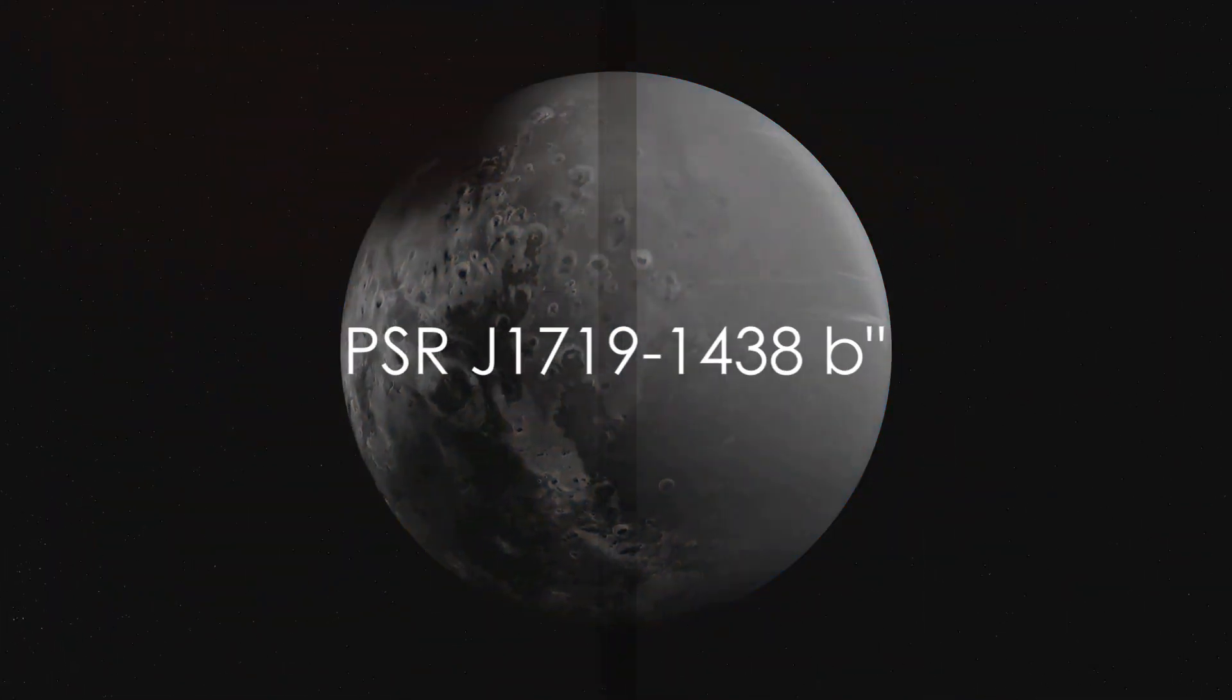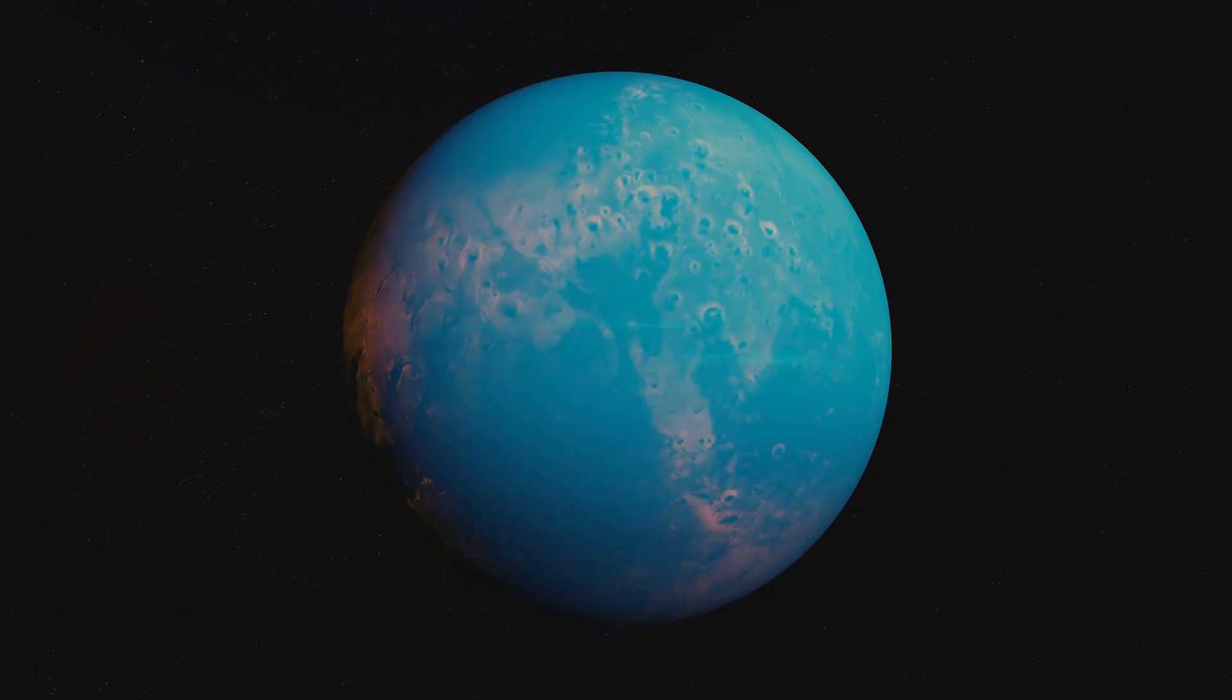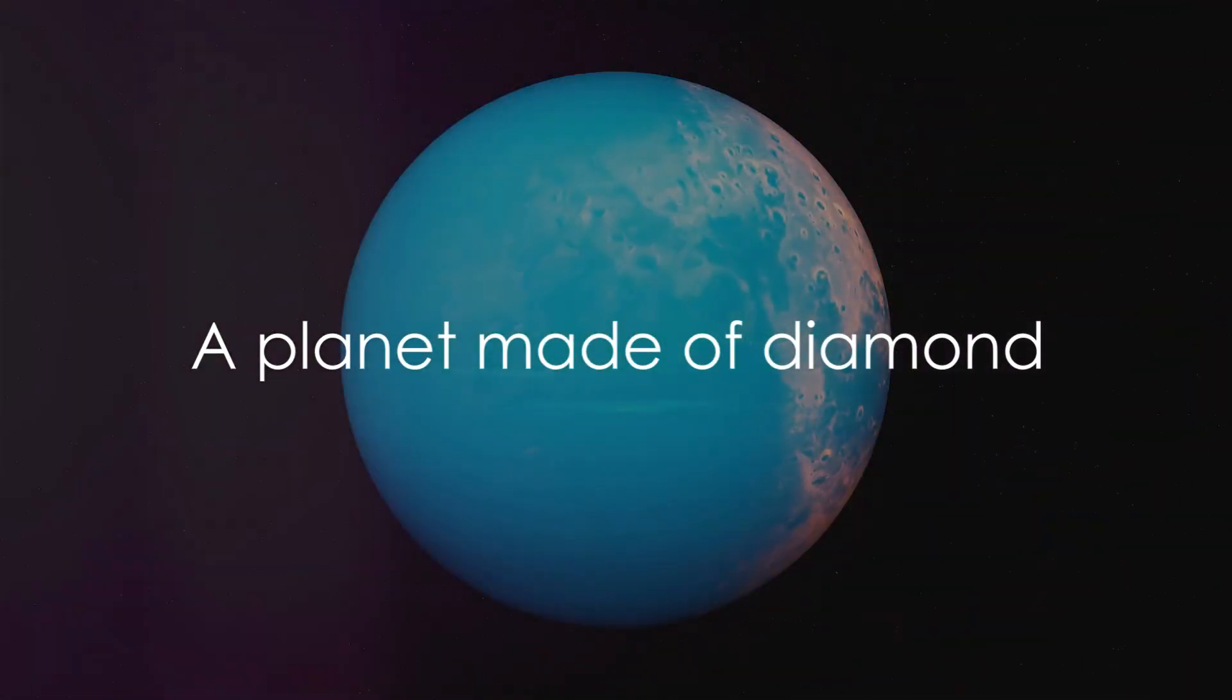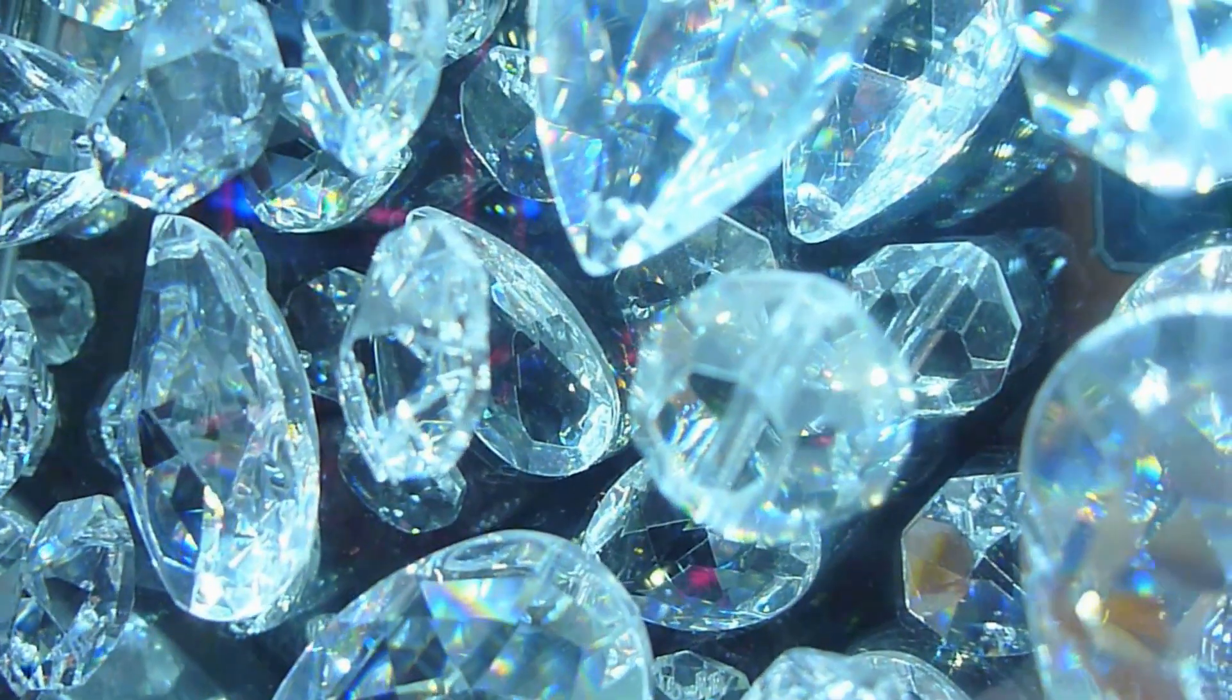Our second most extreme planet is PSRJ-1700-191438b, a planet believed to be made of pure diamond. Yes, you heard that correctly, a planet made of diamond. This extraordinary exoplanet orbits a millisecond pulsar, a rapidly rotating neutron star, within the Serpent's constellation. PSRJ-1700-191438b is incredibly dense, a characteristic attributed to its unique composition.